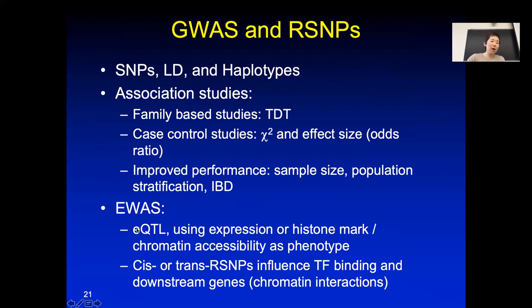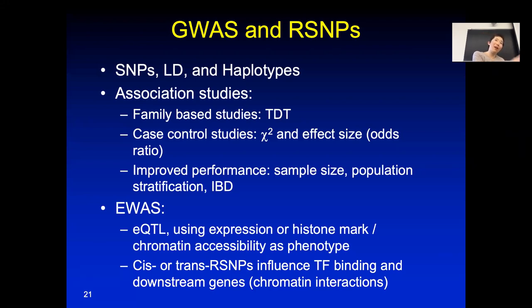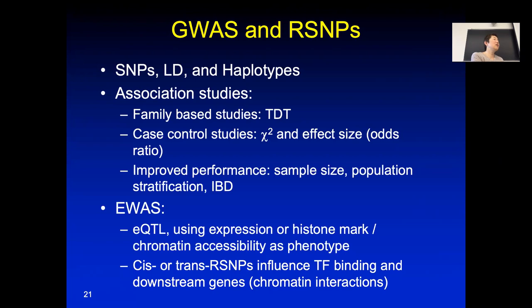Assuming GWAS analysis is done correctly, you end up with 50, 100, or a few strong GWAS SNPs. To interpret these, people use eQTLs — asking for a particular SNP whether it's linked to nearby gene expression. Now people also use histone marks and DNase signals to ask whether a SNP changes the ChIP-seq signal or nearby gene expression. Most GWAS SNPs turn out to be related to transcription factor binding. This could be a cis-eQTL regulating a nearby gene's expression, or a trans-eQTL where the target gene — especially if it's a transcription factor — has many downstream effects. Chromatin interactions and ChIP-seq binding can help interpret the downstream effects.